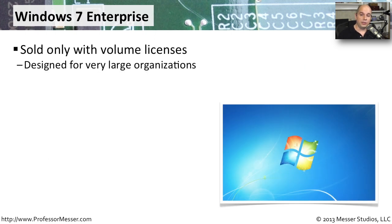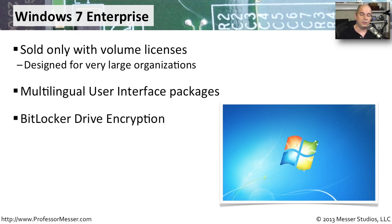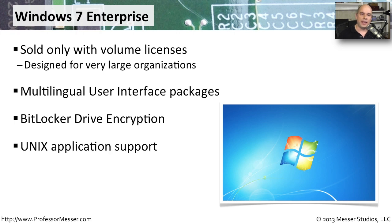Windows 7 Enterprise was the version used with a volume license, typically for very large deployments. It enabled multiple languages in the user interface, which is important for large international organizations. It also supported BitLocker volume-level encryption, so that if a laptop was stolen or lost, the data would still be protected. Windows 7 Enterprise also enabled Unix application support, which is important for some large organizations.